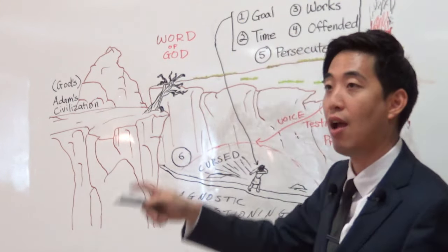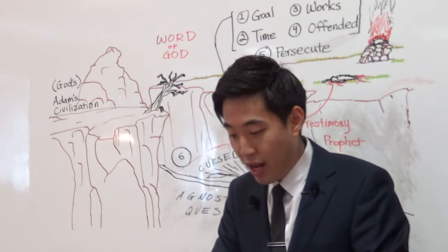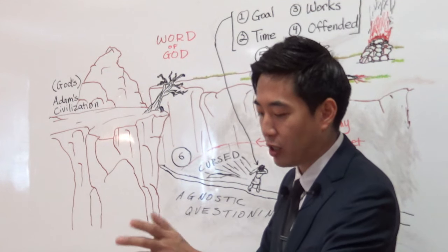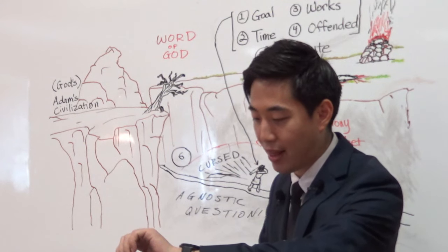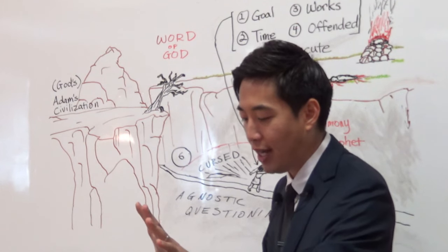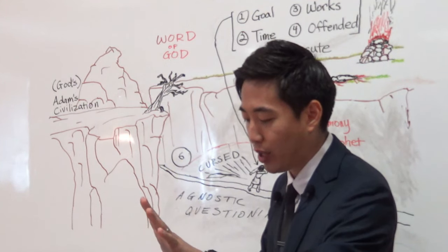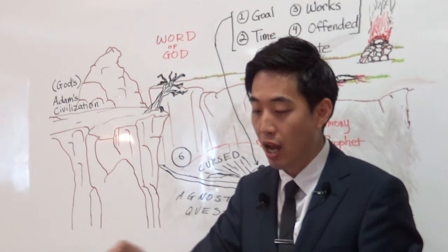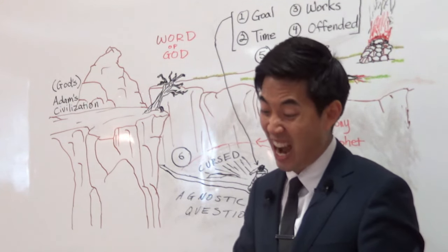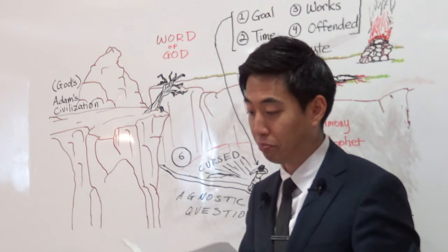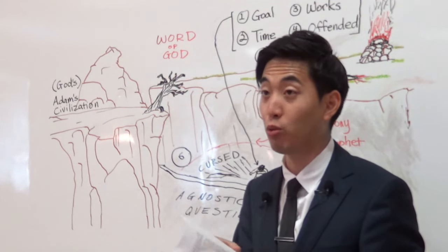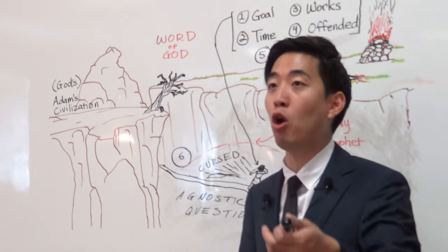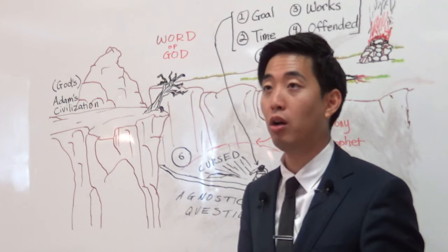Ezra chapter 9. Look at verse 13. And after all that has come upon us for our evil deeds and for our great trespass, seeing that thou, our God, hast punished us less than our iniquities deserve. Now that is something that should encourage you. Now if you get distressed and depressed over God's punishment over your sins, you know what will encourage you? I deserved worse.